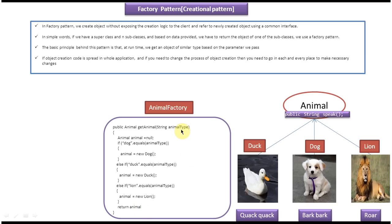If you pass duck, then this method will create the duck object and assign it to the super class object reference animal, and that animal reference will be returned to the caller. Similarly, if you pass animal type as lion, then a new lion object will be created and assigned to the super class animal object reference and returned to the caller. So basically, based on the animal type you pass, it will create the corresponding animal and assign it to the super class animal object reference and return it to the caller.